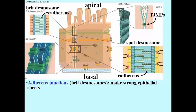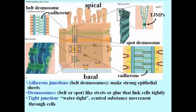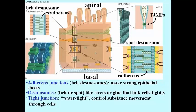Adherence junctions — these are belt desmosomes — help to create strong sheets of epithelial cells or endothelial cells that line the blood vessels or your gut. The spot desmosomes are rivets that link cells together tightly. The tight junction, made with those TJMPs, forms a watertight barrier that can control how substances move. They can either get into the cell and traverse a sheet of cells from one side to the other, or they can't get across the sheet.